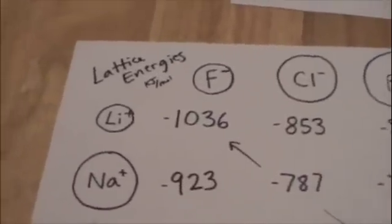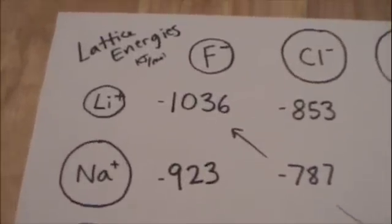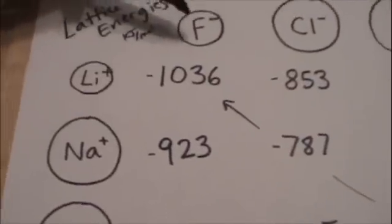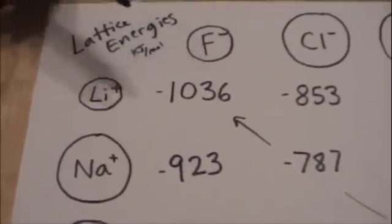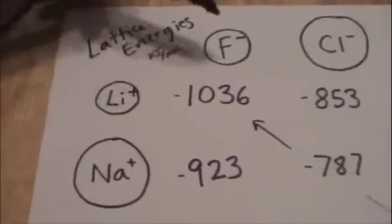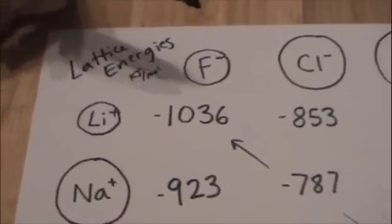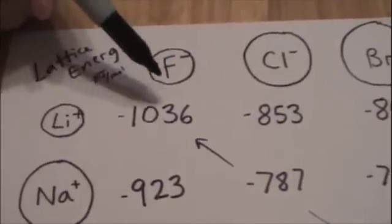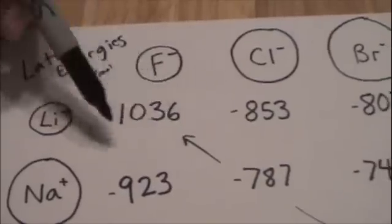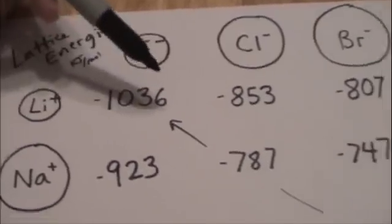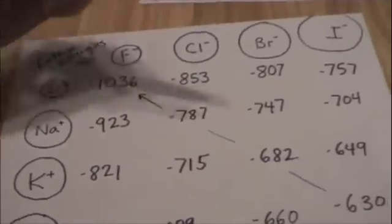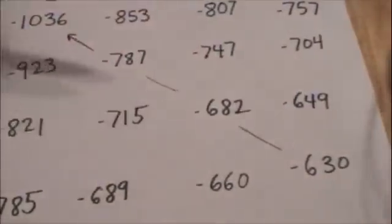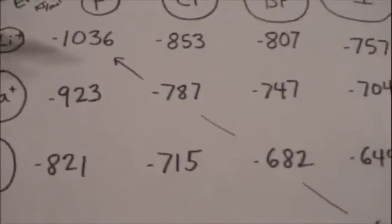How does the size of the cations and anions affect the lattice energy? Well, smaller cations and anions are going to be held more strongly, they're going to be more stable, so the lattice energy of lithium fluoride is going to have a lot larger numeric value than the lattice energy of rubidium and iodine coming together, negative 630 kilojoules per mole.